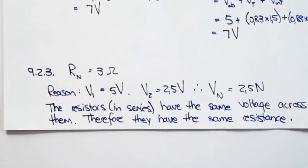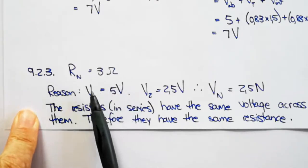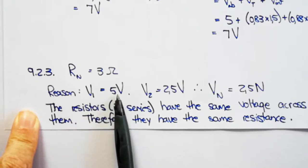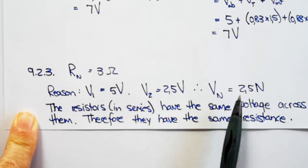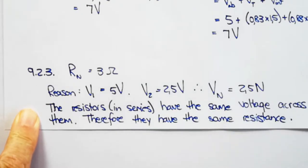RN must be 3 ohms. That is your two-mark answer. The reason: V1 is 5 volts. The V2 reading is 2.5. Therefore the volts across N is 2.5. The resistors are in series. They have the same voltage across them. Therefore they must have the same resistance.